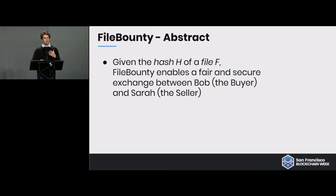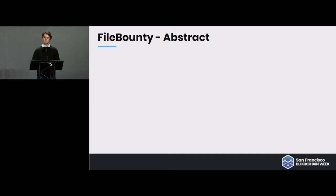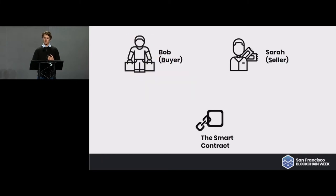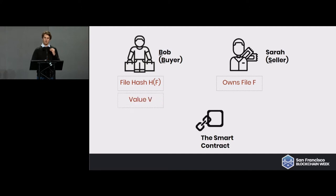The actors are Bob the buyer, Sarah the seller, and the smart contract. The buyer knows the file hash — this is a very important assumption. The seller owns the file. The buyer is willing to pay value V to get the file, and both of them have deposits in the smart contract.